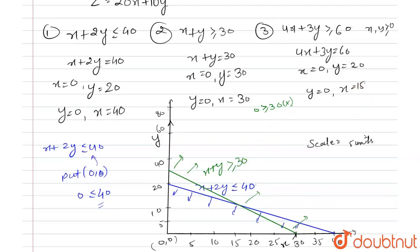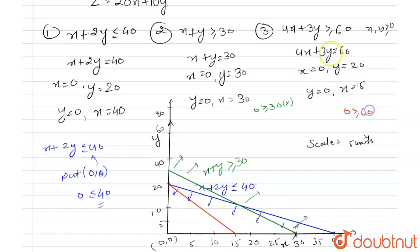Similarly, we plot the region 4x plus 3y greater than or equal to 60. The straight line curve: when x equals 0, y equals 20, and when y equals 0, x equals 15. When we put origin (0, 0) into the equation, we get 0 greater than or equal to 60, which is also not satisfied. So this region also contains the area far away from the origin.